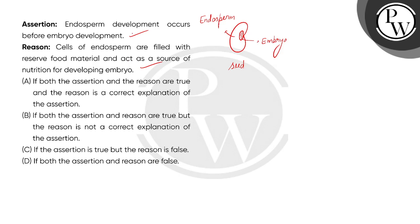And reason correct explanation assertion ka. So if both the assertion and the reason are true and the reason is a correct explanation of assertion, yeh sahi diya hua hai kyunki dono correct hai and reason bhi correct explanation assertion ka.